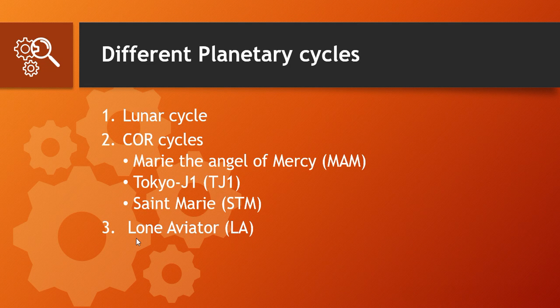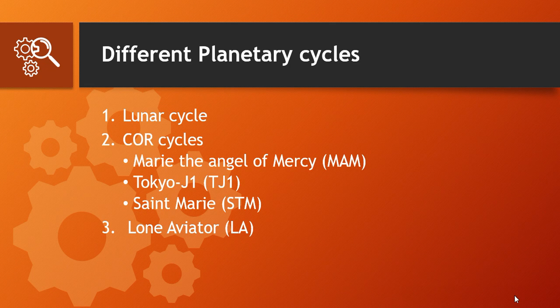The last type of planetary cycle is the Lone Aviator. The Lone Aviator cycle pivots faster than the lunar cycle. The lunar cycle pivots 4 to 5 times in a month, the COR cycle pivots 2 to 3 times on average in a month, and the Lone Aviator cycle pivots 7 to 8 times in a month — so the Lone Aviator is used to time entry and exit from the market. The lunar cycle is geocentric, while the COR cycles and Lone Aviator are heliocentric cycles.